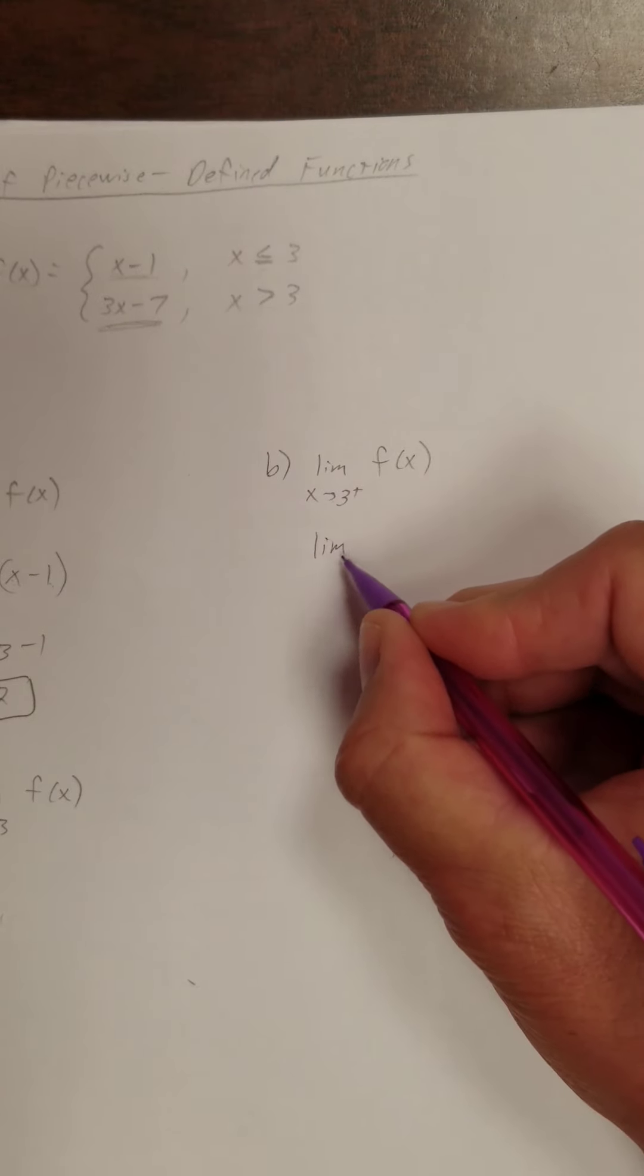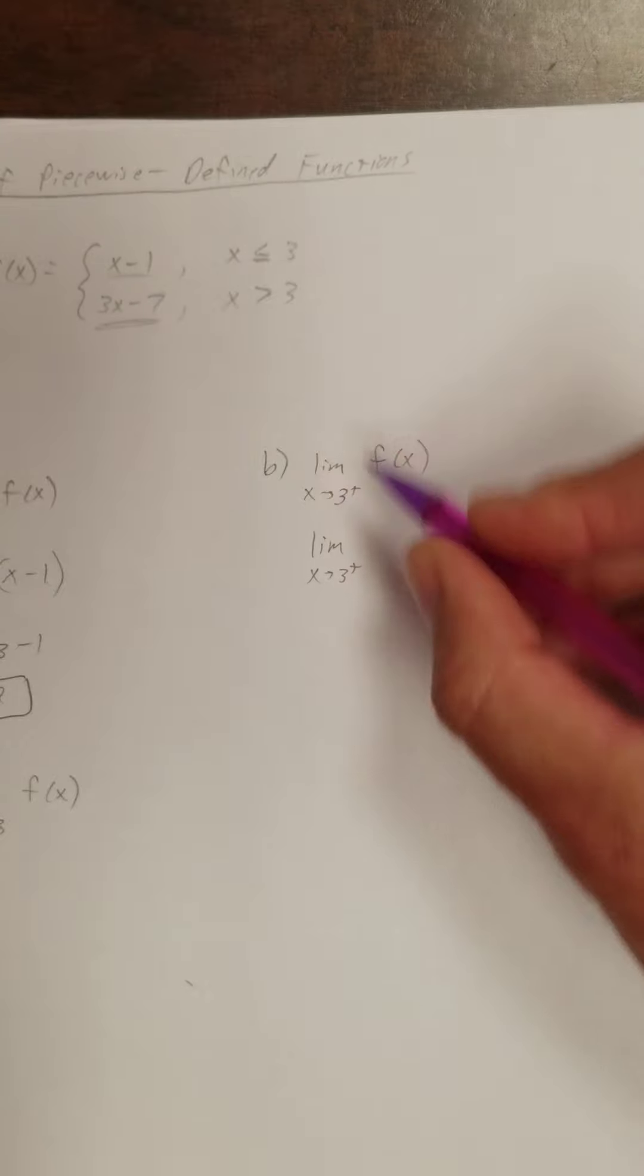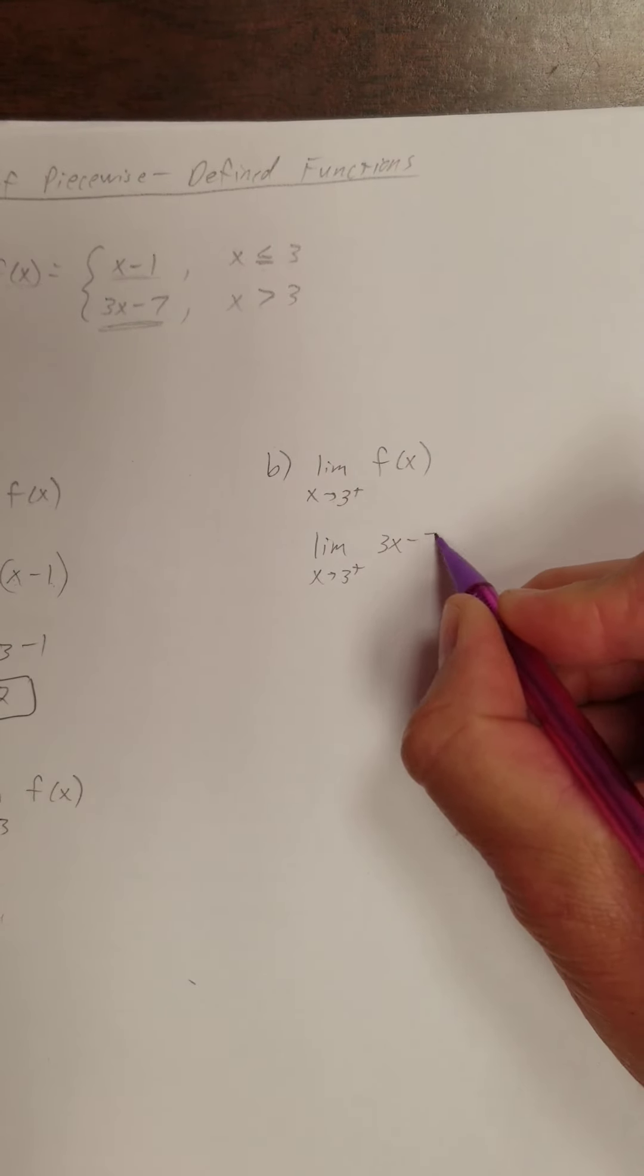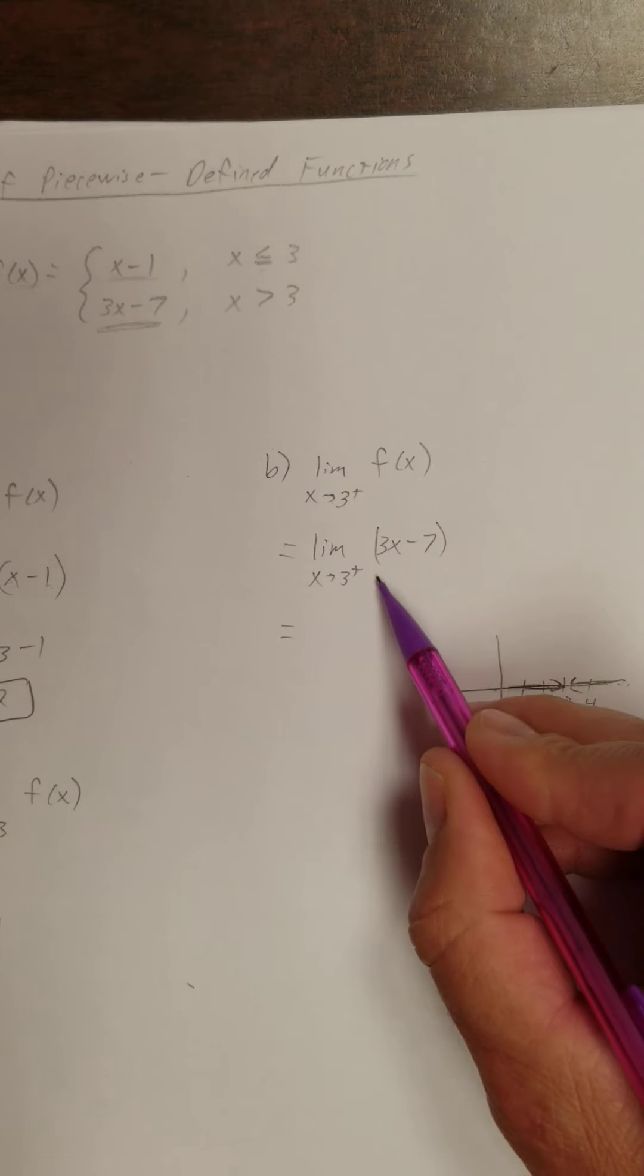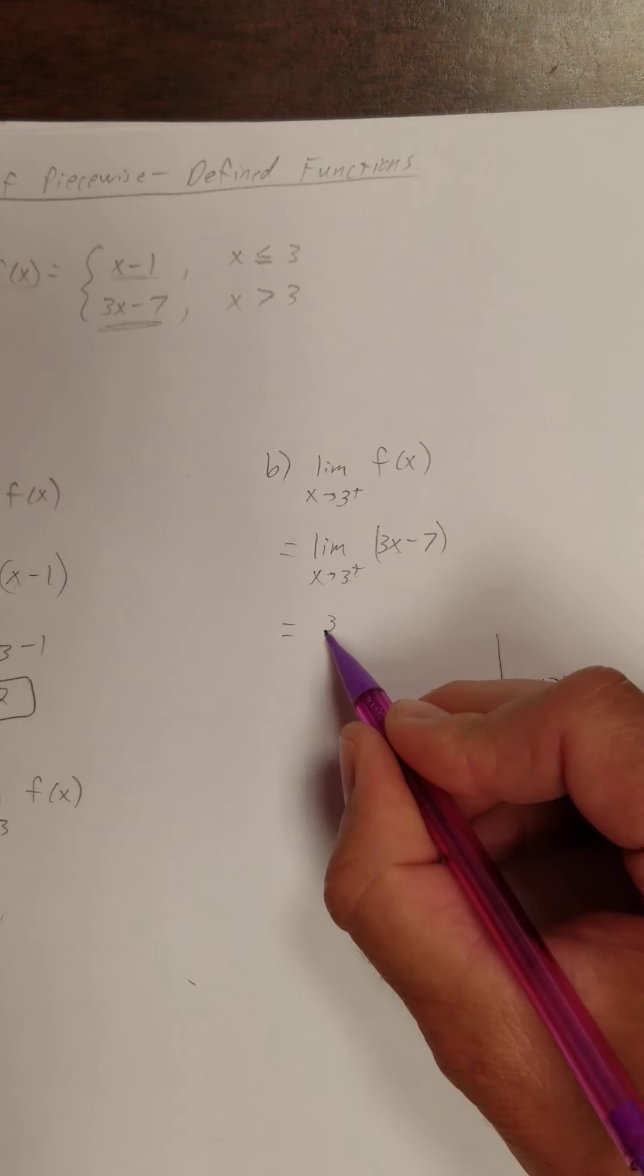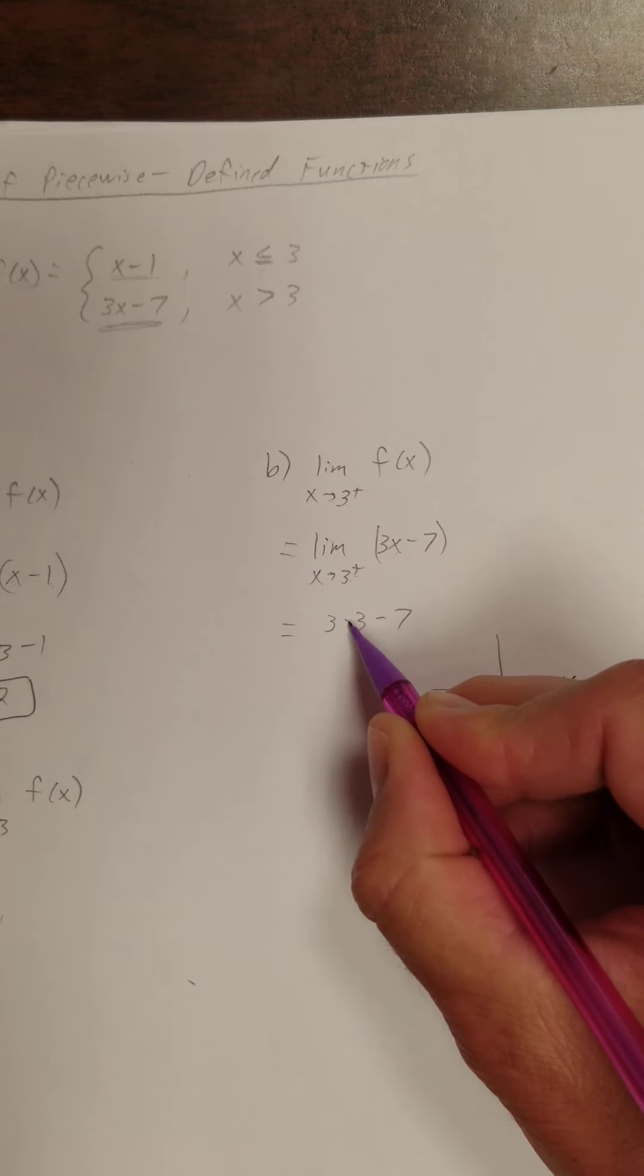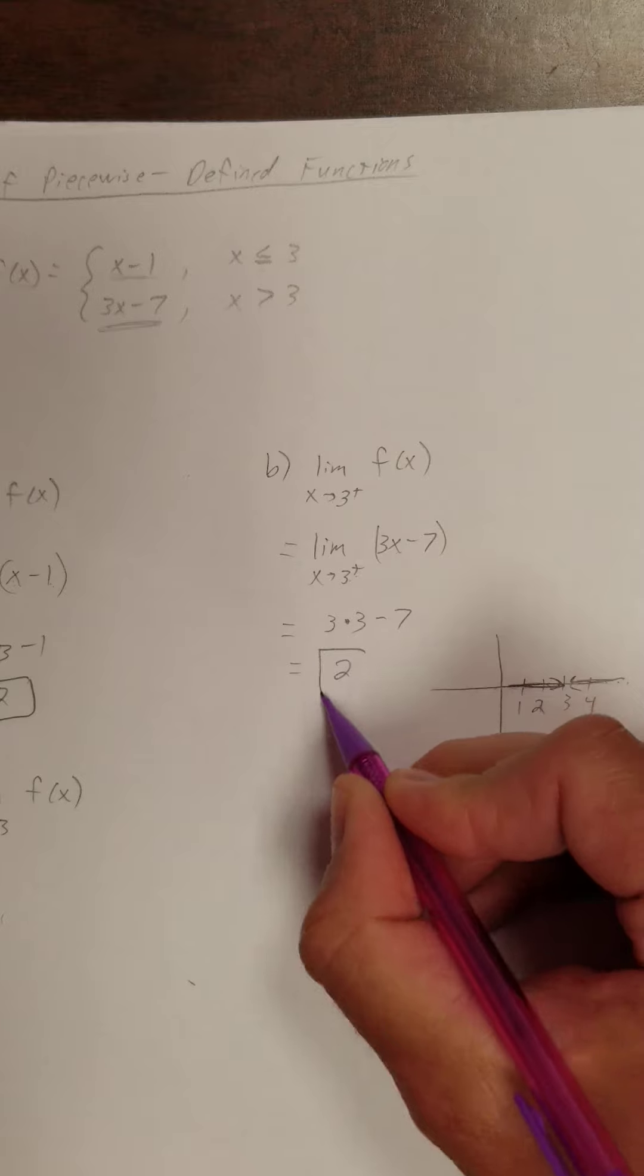So I'm going to say that's the limit as x approaches 3 from the right of 3x minus 7. Well, that's just a polynomial, so I can sub in 3 for x. So 3 times 3 minus 7 is 9 minus 7, or 2.